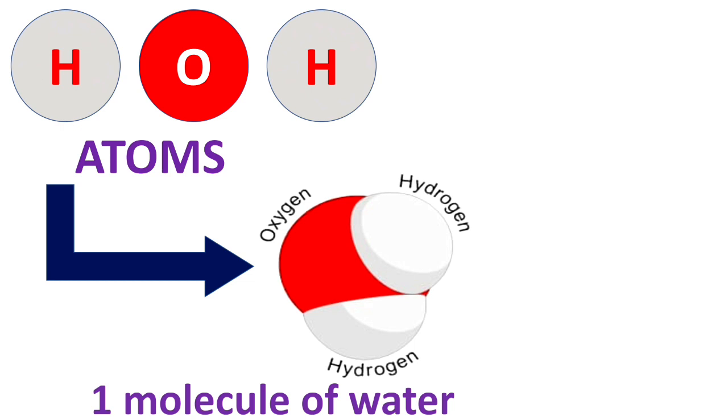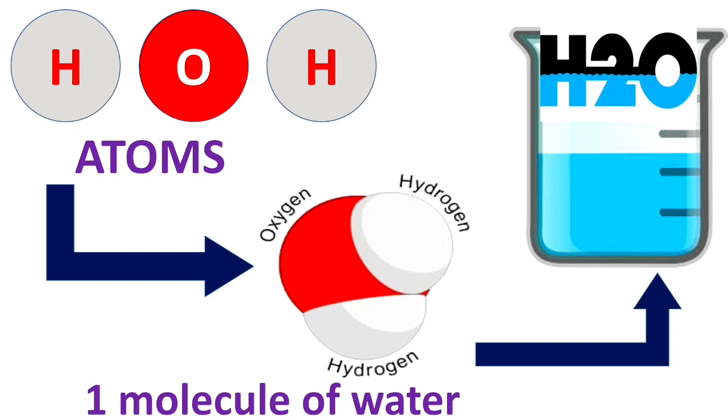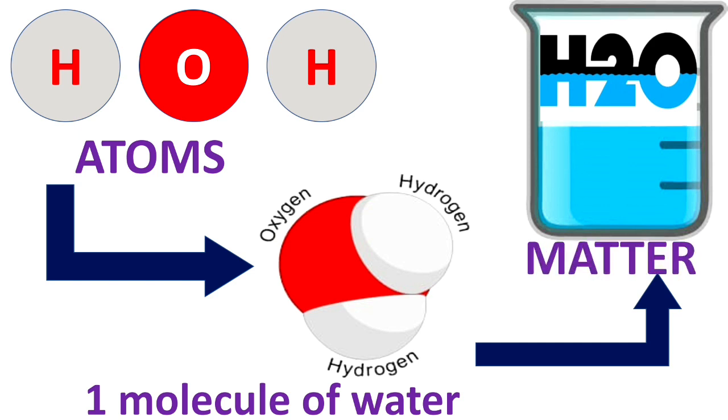Now one molecule of water is really very small. So if you see a beaker full of water, then it means it contains millions and trillions of water molecules. As we are aware, water occupies space and has a weight, that means it is matter.